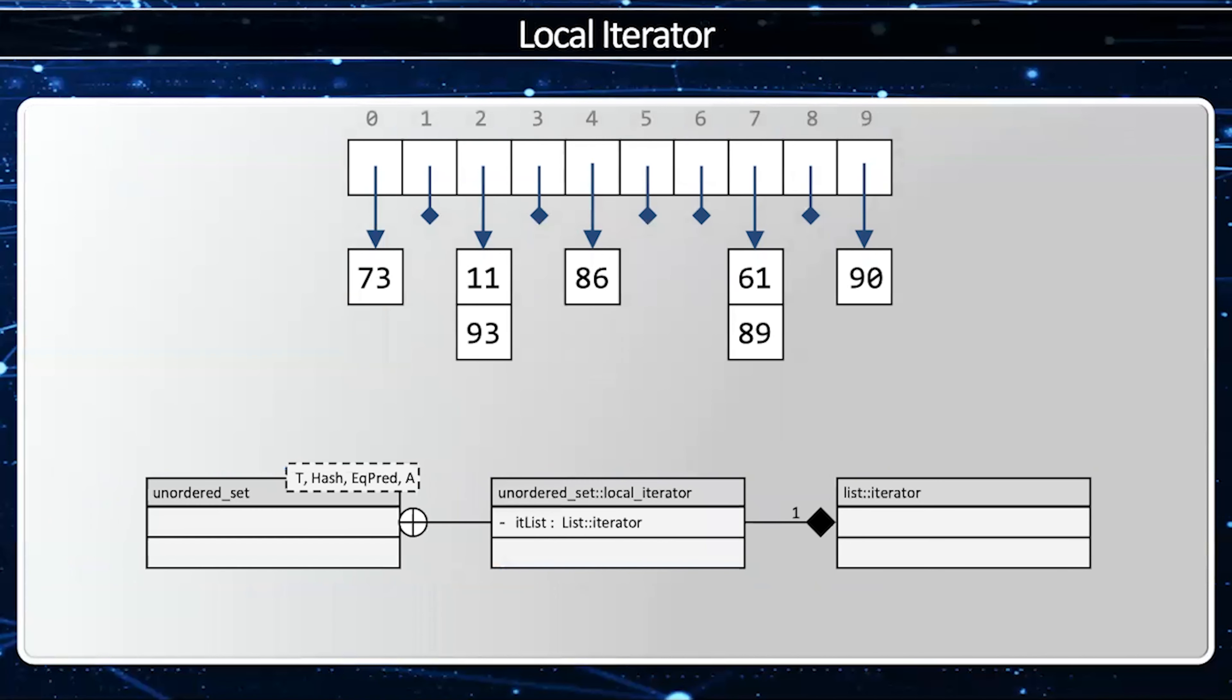The first iterator is called the local iterator. The local iterator will iterate through a single bucket in a hash table. Each bucket corresponds to a list and so each list has a list iterator and therefore the unordered set its local iterator has a list iterator as its only member variable.